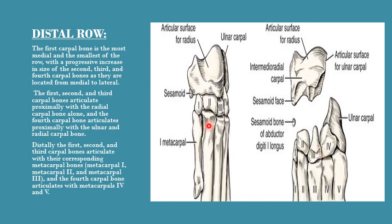The fourth carpal bone articulates distally with both the fourth and fifth metacarpal bones. To summarize: the first, second, and third carpal bones articulate proximally with the radial carpal, while the fourth carpal bone articulates proximally with both radial and ulnar carpal. Distally, the first, second, and third carpal bones articulate with the first, second, and third metacarpal bones respectively.